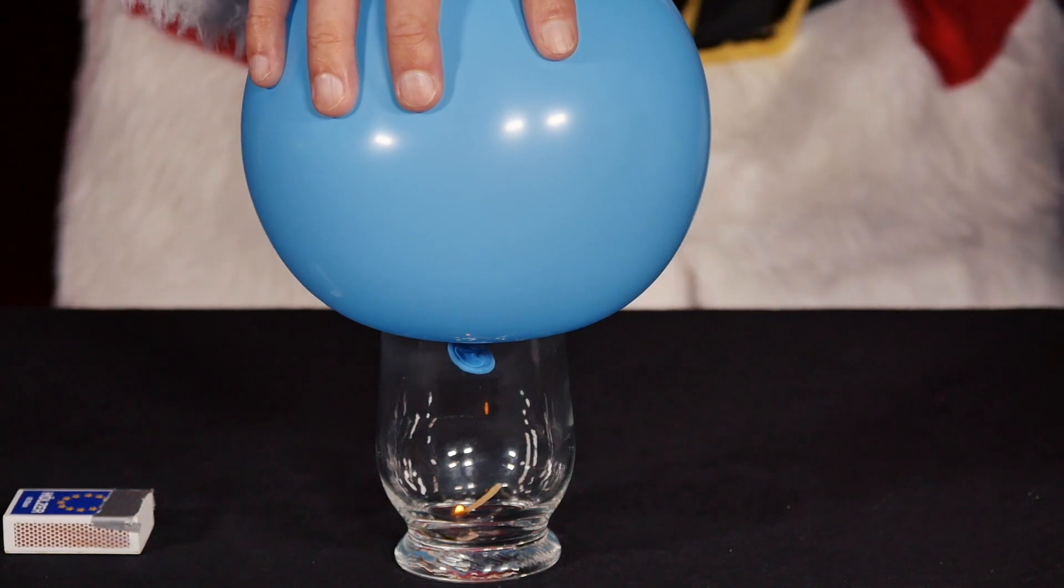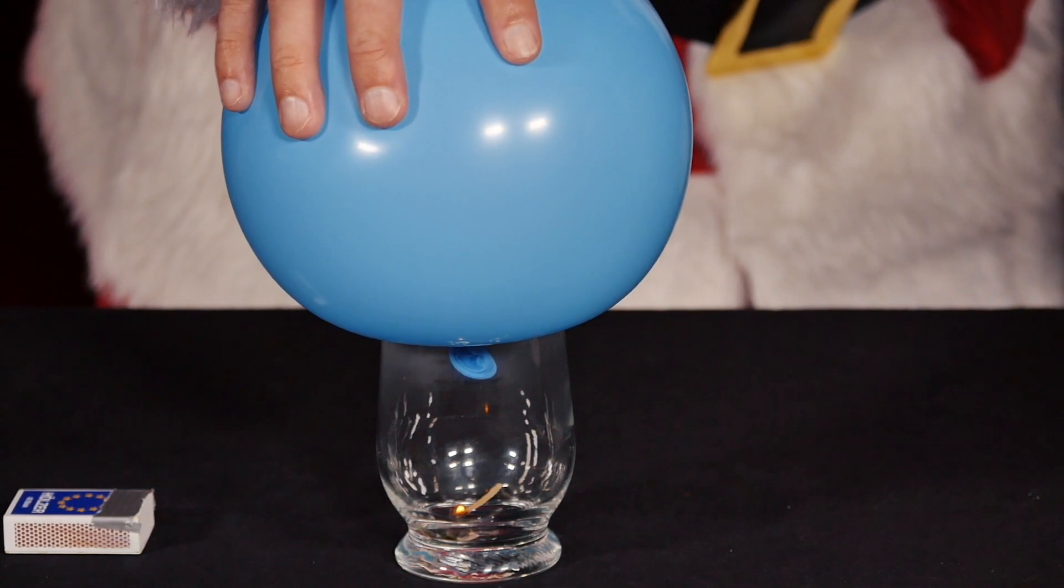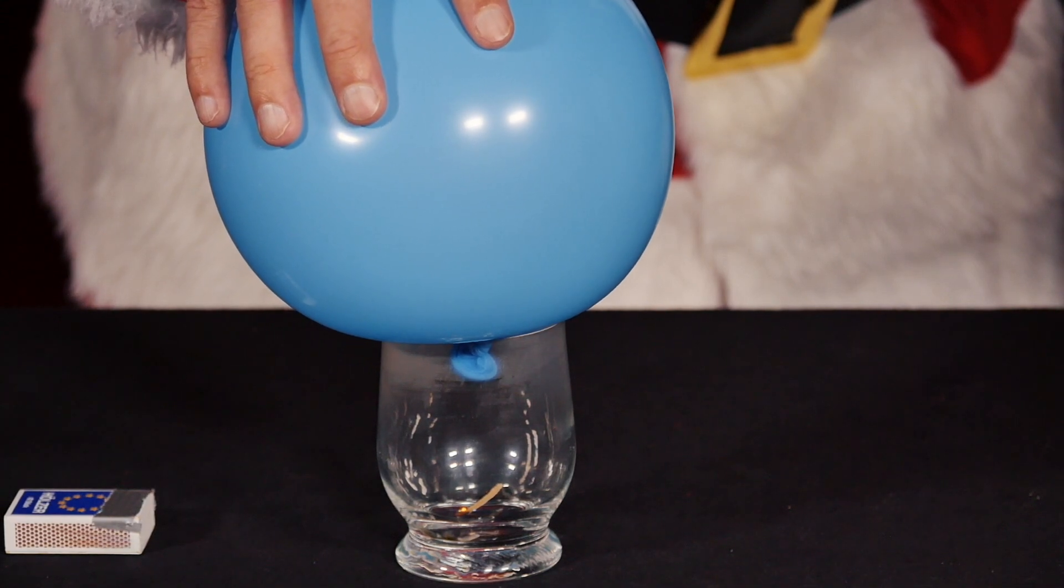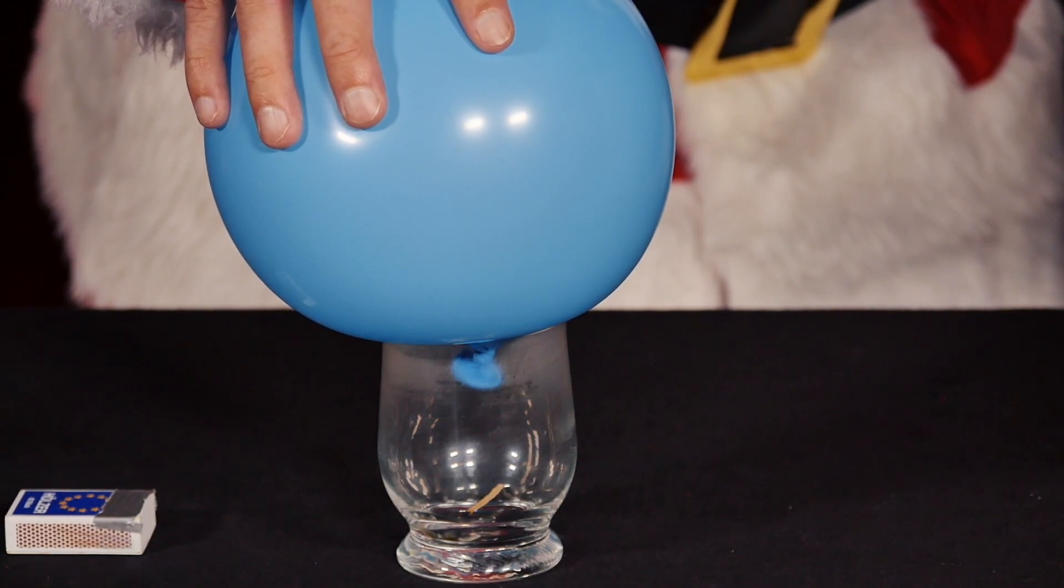The flame of the match converts oxygen into carbon dioxide. Due to a lack of oxygen, the flame goes out quickly. The combustion process has reduced the gas volume or air pressure in the glass.